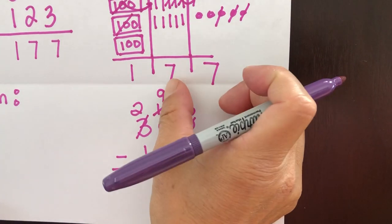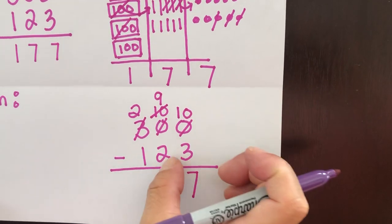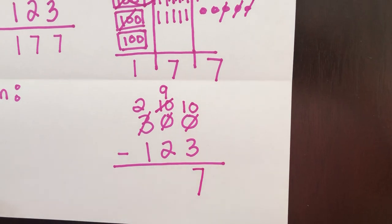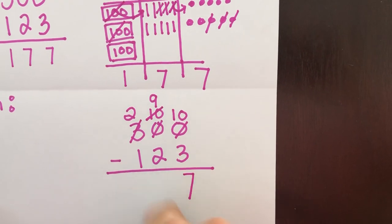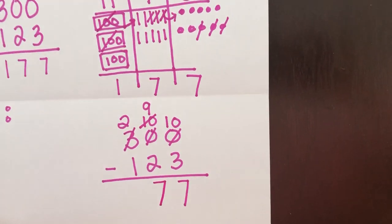And now I'm ready to go to the tens column. So my tens column says nine, take away two. And that's easy. We count backwards. Nine, we take away two, eight, seven. So I'm going to write my seven now.